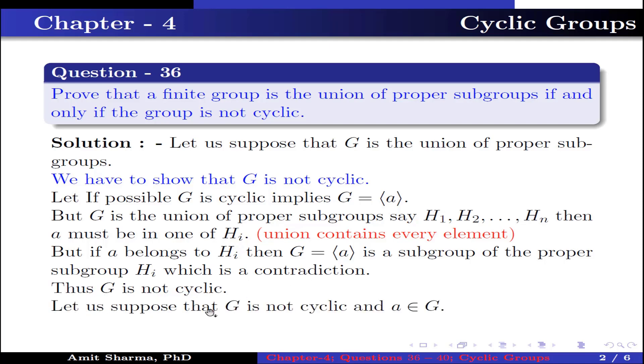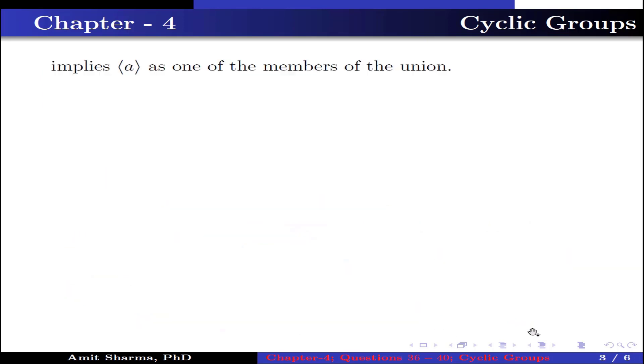Now let us suppose that G is not a cyclic group and a belongs to G. Since G is not cyclic, this implies the group generated by a is a proper subgroup of G. This implies the group generated by a is one of the members of the union. Continuing in this way, we get a union of all proper subgroups of G.